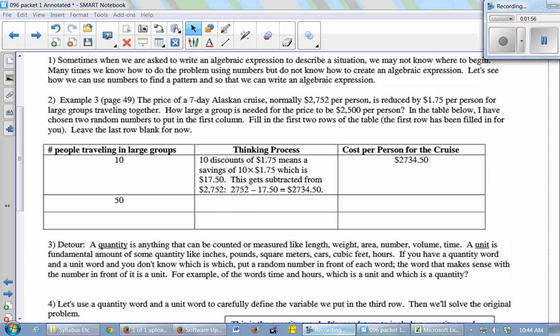So here's an example from your textbook. The price of a seven-day Alaskan cruise is normally $2,752 per person, but you can reduce that by $1.75 per person if you have a large group that travels together. How large a group would be needed to lower that per person price from $2,752 down to $2,500? In this table, I've chosen two random numbers to put in the first column. I've got 10 and 50. This is the number of people traveling in the large group.